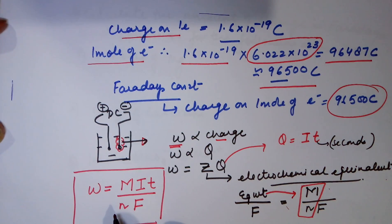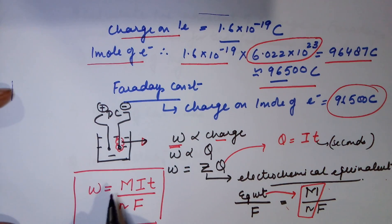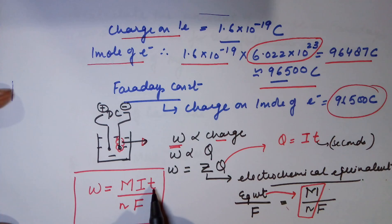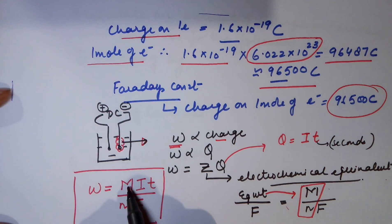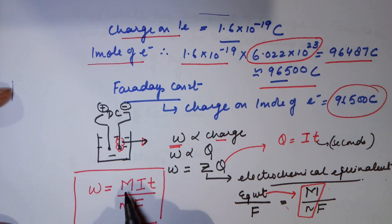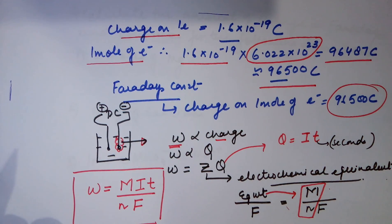W equals atomic mass multiplied by the current in amperes multiplied by time in seconds divided by N and F. The N would depend on the element that you are depositing and atomic mass is also for the element which is deposited. Time is in seconds and F stands for 96500.